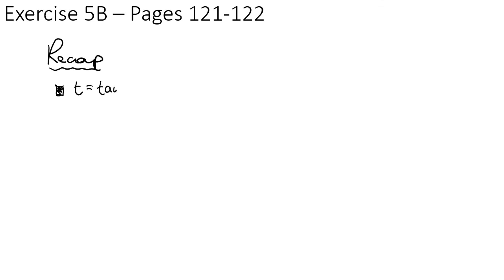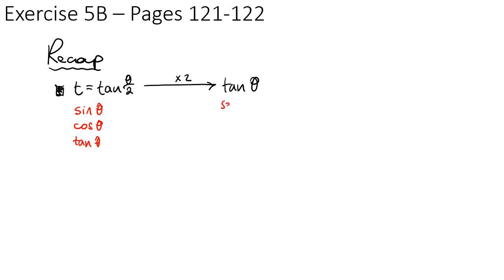You should now be able to do exercise 5b on pages 121 to 122. Just a quick recap: remember our t formulae, and you can double everything up as in the previous example. So if we double everything up, sin θ, cos θ, and tan θ in our t expressions would correspond to sin 2θ, cos 2θ, and tan 2θ.